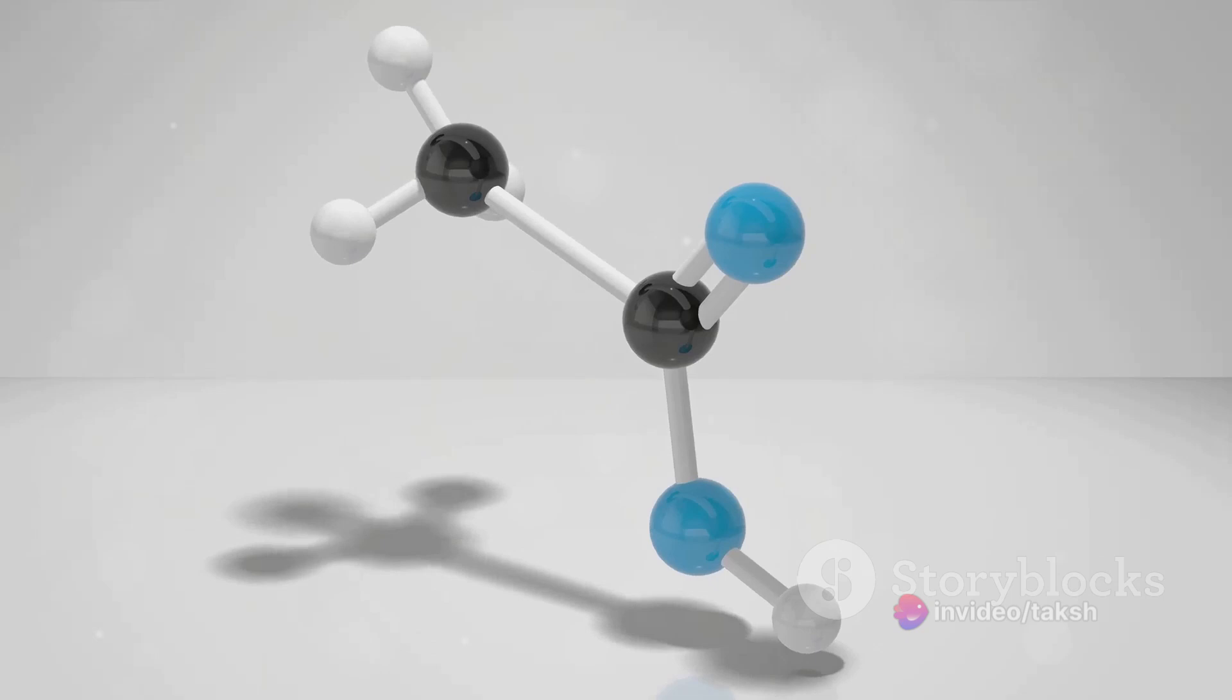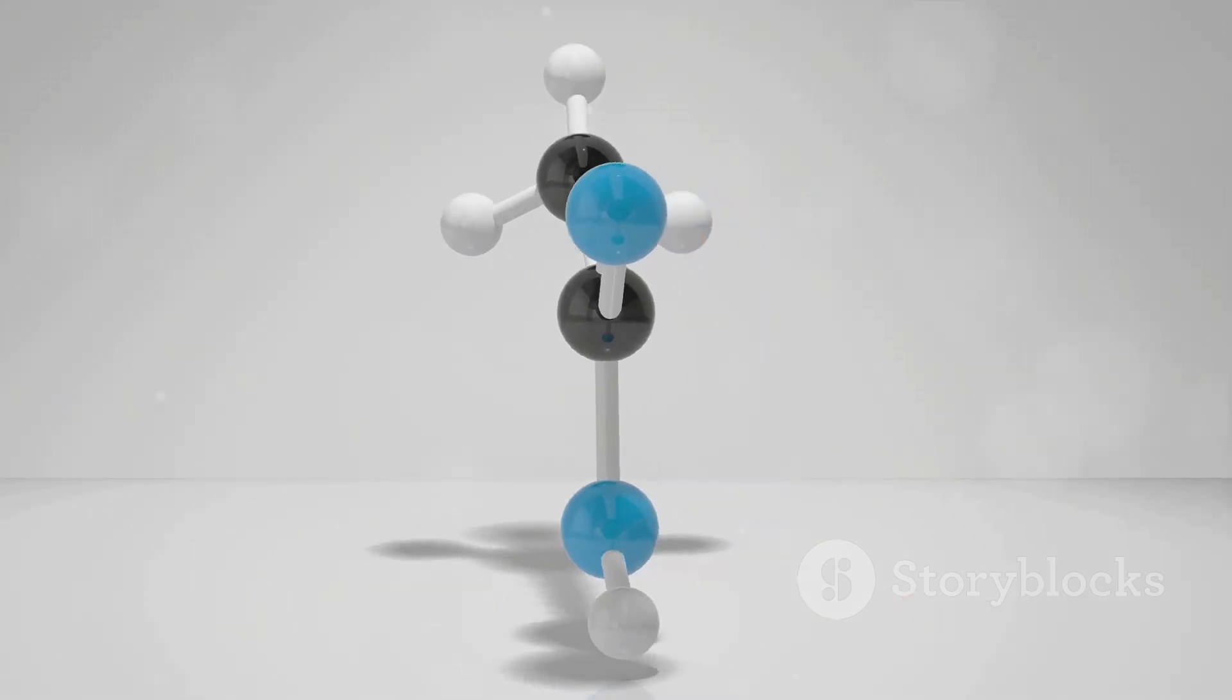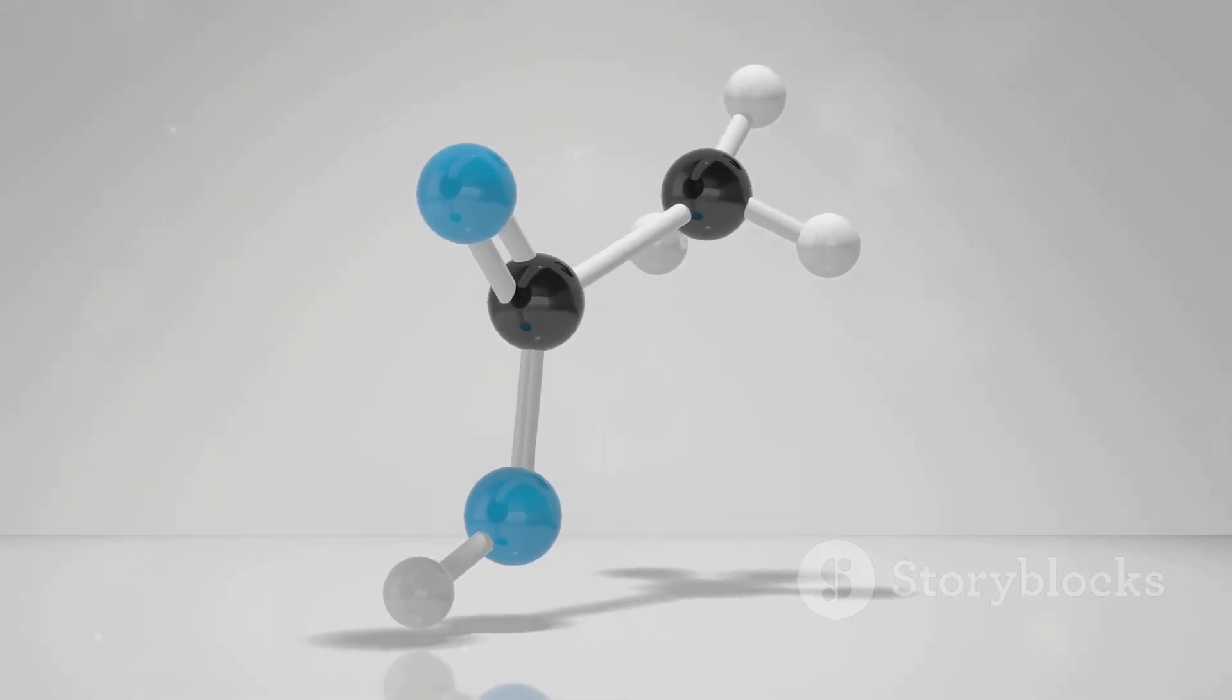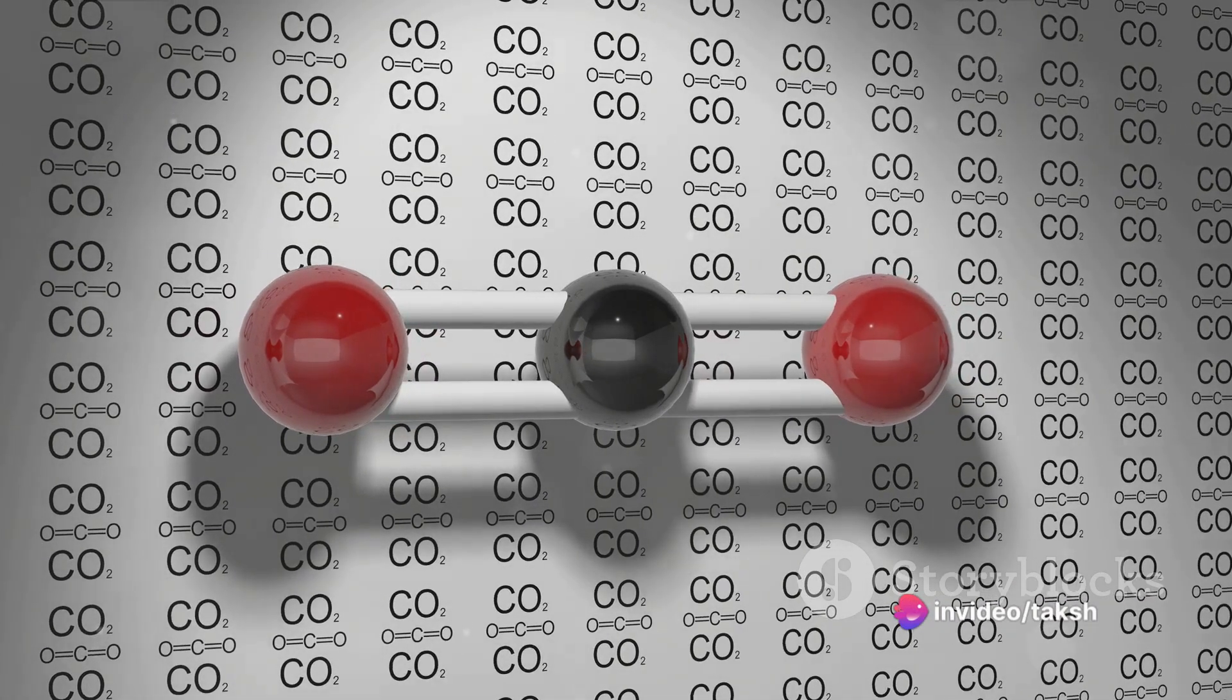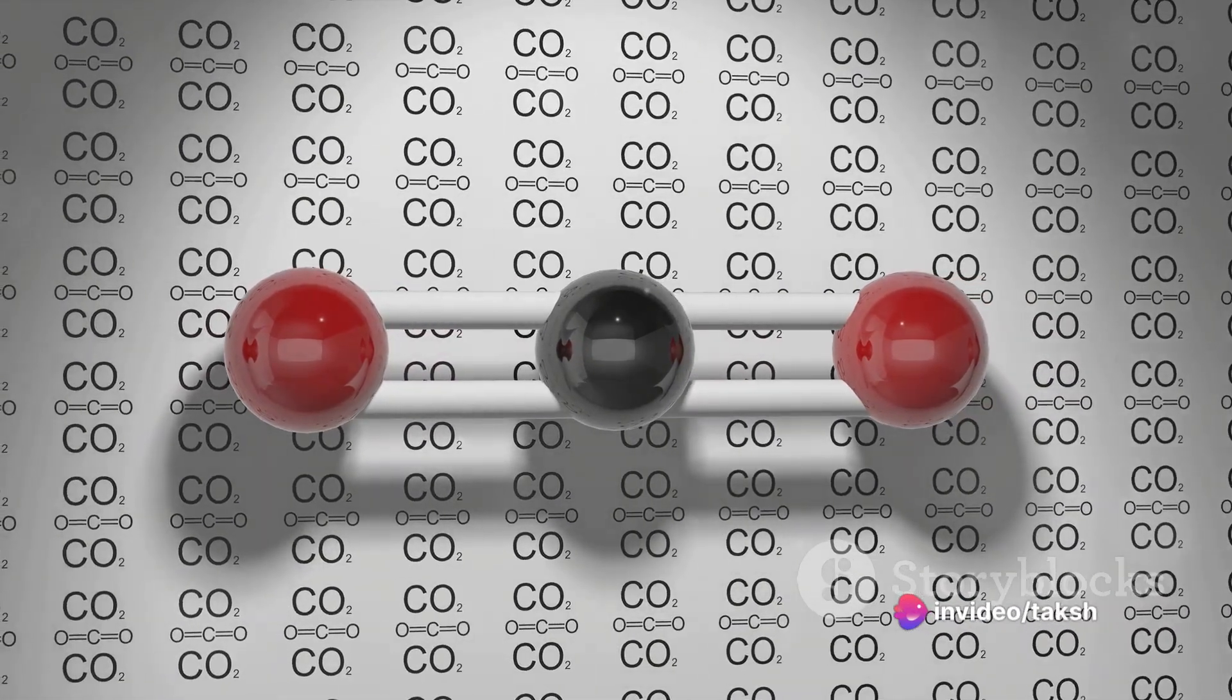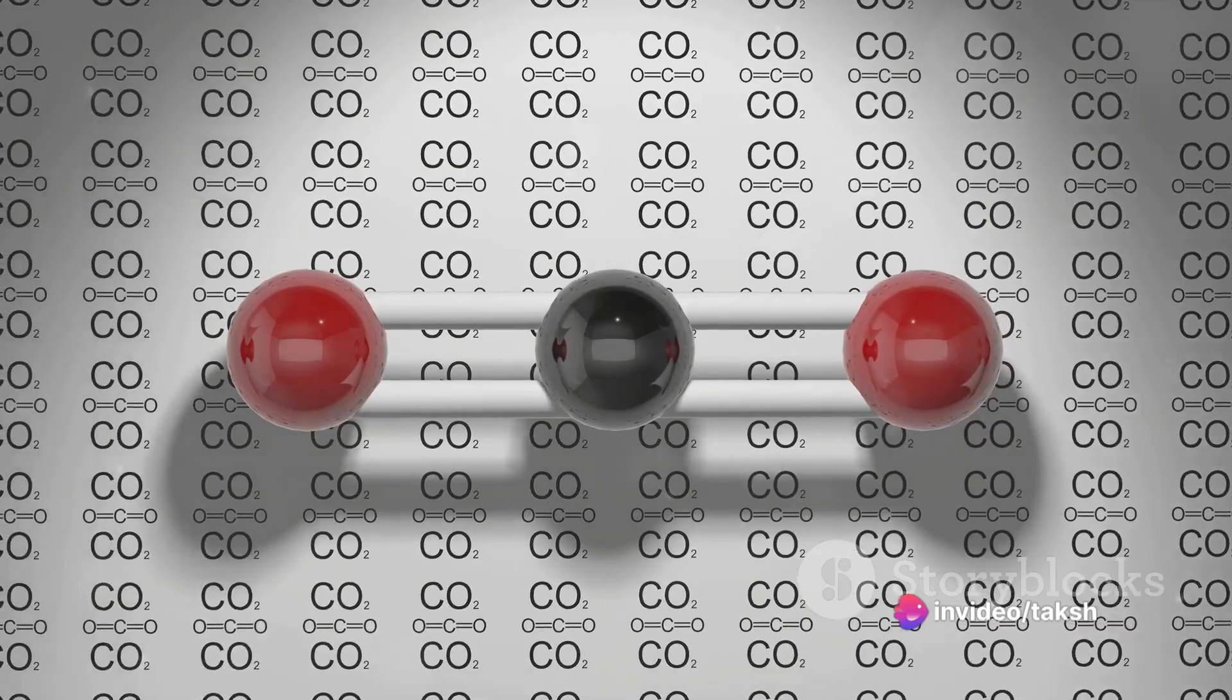Next we have alkenes. These are unsaturated hydrocarbons distinguished by one or more double bonds between carbon atoms. Imagine a paperclip chain with each clip representing a carbon atom, and the joining of the clips signifying double bonds.